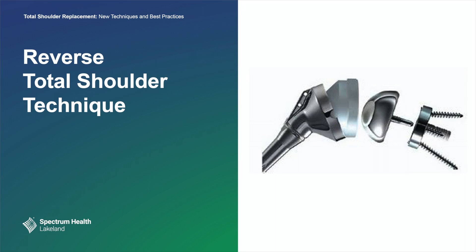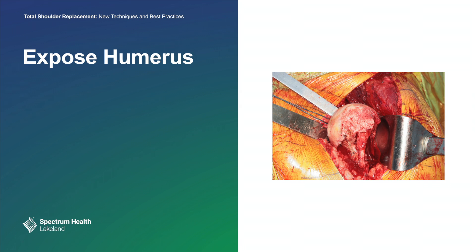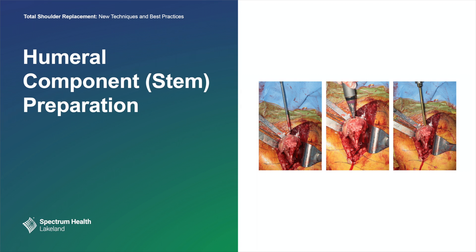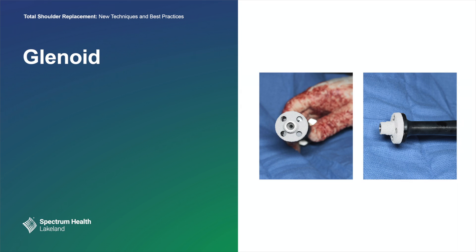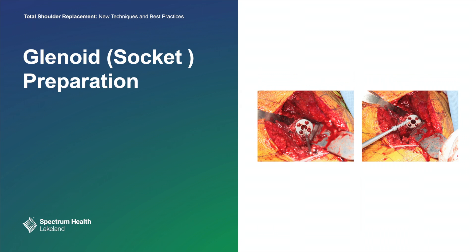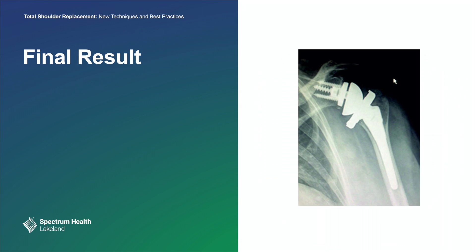These are the pieces of a reverse shoulder replacement. We do the operation the same way as a regular shoulder replacement — that's the incision, we expose the ball, we make a cut in the ball with a cutting guide. We ream down the canal of the bone. Then we place the base plate on the socket and fix it with screws. Then we put one of these balls on top of that base plate, so the ball is now on the socket. Then we insert the component into the stem of the shoulder, and we have a completed reverse total shoulder replacement.